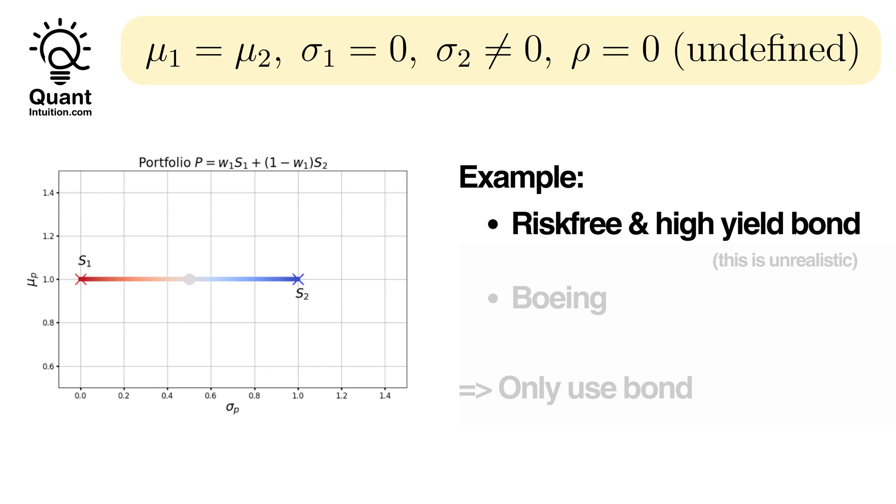In a practical scenario, you can consider S1 as a risk-free, high-yield bond, and S2 as a stock like Boeing. This, however, is of course just an idealized scenario, since in reality, a high-yield risk-free asset does not exist, since market forces will adjust its price to balance the yield.